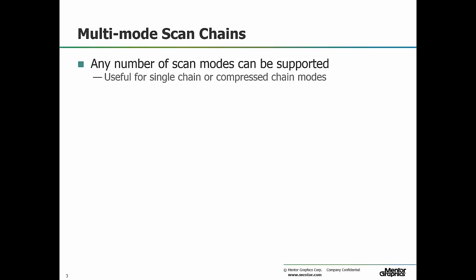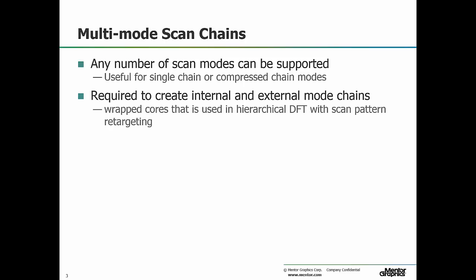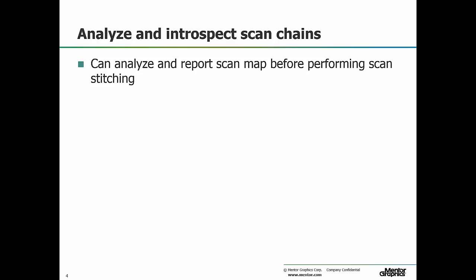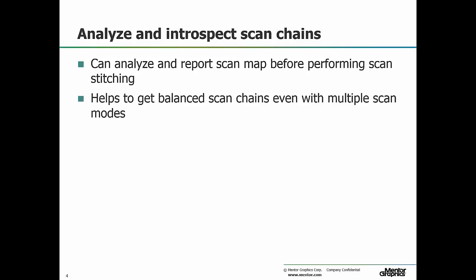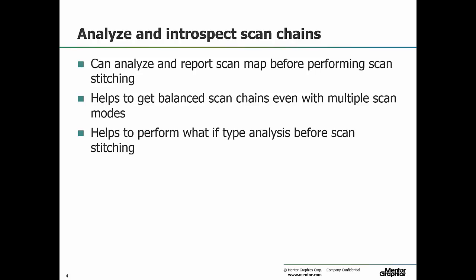With the multi-mode scan chains feature, any number of scan modes useful for creating single chain or compressed scan chains can be supported — a must if using wrapped cores with internal and external modes. Such wrapped cores are used for hierarchical DFT implementation and scan pattern retargeting. Analyzing and reporting the scan map before performing scan stitching helps to get balanced scan chains even with multiple modes, and is excellent for performing what-if type analysis before scan stitching.